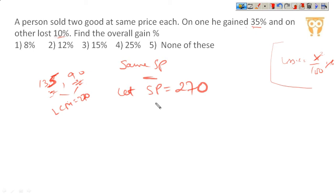Now, because we have selling price 270 for both, we can find the cost prices. For the first one, CP is 200. For the second one, CP is 300. Total selling price is 540, total cost price is 500. So profit is 40 rupees. Profit percentage is 40 upon 500 into 100, which is 8%.